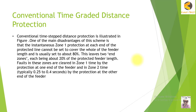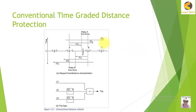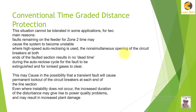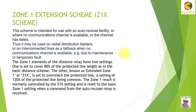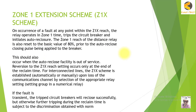We will then understand conventional time-graded distance protection — how zones are defined, how Zone 1, Zone 2, and Zone 3 are selected, and how zone tripping is done. After explaining these theories, we will study our first permissive intertrip scheme, which is called the Zone 1 Extension scheme, where Zone 1 is extended temporarily for a given time period.